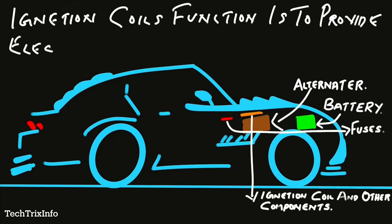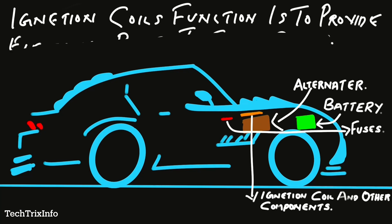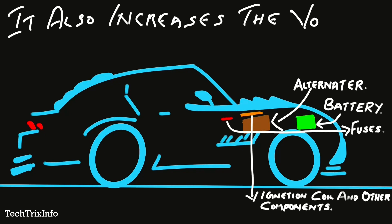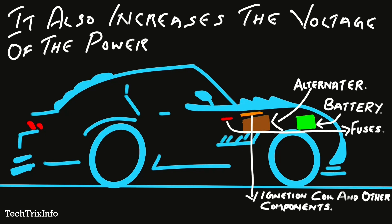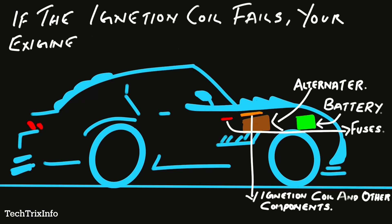The next component is the ignition coil. Its function is to provide electrical power for the spark plugs to function. The ignition coil also increases the voltage of the electrical power provided. If the ignition coil fails for any reason, your engine will not start or will stop working while driving.